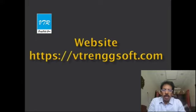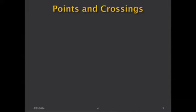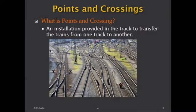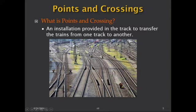Without further ado, we will go to the subject. Points and crossing is an installation provided in the track to transfer trains from one track to another. You can see many lines — parallel and non-parallel — connected together, forming a major network of track. This is a typical layout of a major yard, showing how all lines are connected.